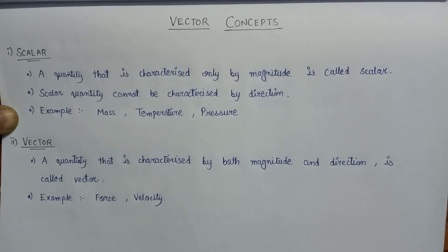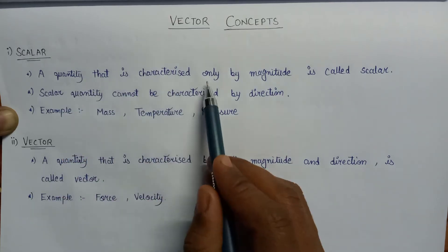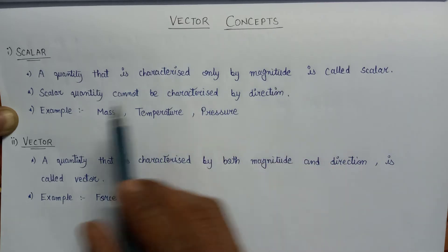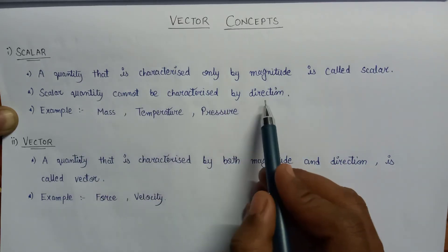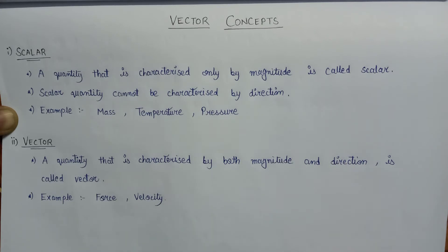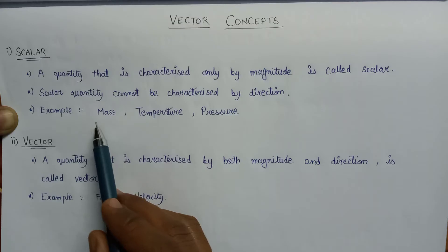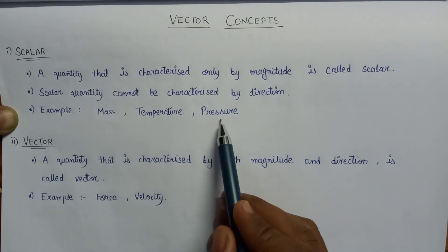Welcome. In this lecture we are going to learn about vector concepts. There are two types of quantity — a quantity can be characterized either as a vector or as a scalar quantity. A scalar quantity is a type of quantity that is characterized only by magnitude. Scalar quantity cannot be characterized by direction, so it does not require any direction for its complete specification. Examples of scalar quantity include mass, temperature, and pressure.